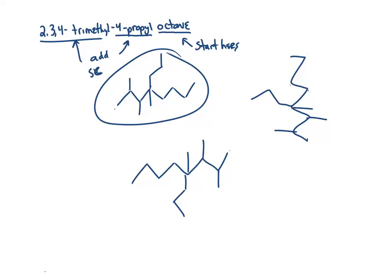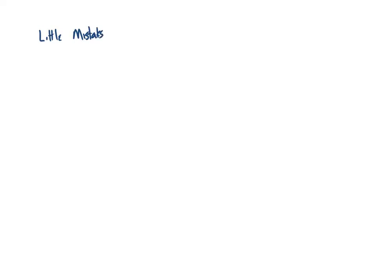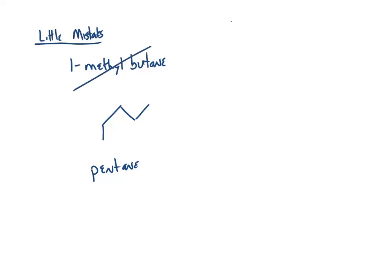Going from a name to a molecule is generally a lot easier. I want to point out some common mistakes. For instance, is it possible to have 1-methylbutane? If I try to draw that — there's butane, and here's my methyl group — what is that really? It's really just pentane. You can never have a 1-methyl group, because it just becomes part of the longer chain. Just like you can't have a 2-ethyl group, because it automatically becomes part of the longest chain.